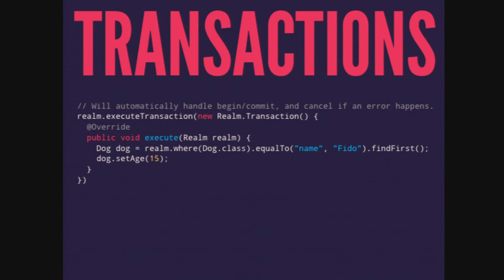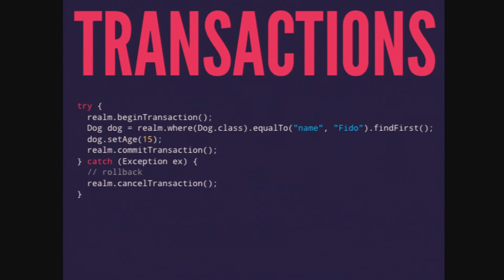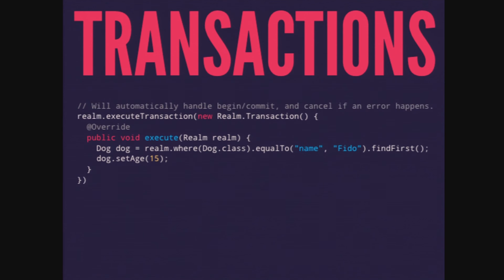The recommended approach is to use a transaction block: call realm.executeTransaction(), pass in a new transaction instance. You do your work inside — for example, querying and setting the age — without calling beginTransaction or commitTransaction manually; begin is called before and commit is called right after. If an exception occurs, the transaction is automatically rolled back. This ensures you're calling begin, commit, and cancel properly without having to worry about it.